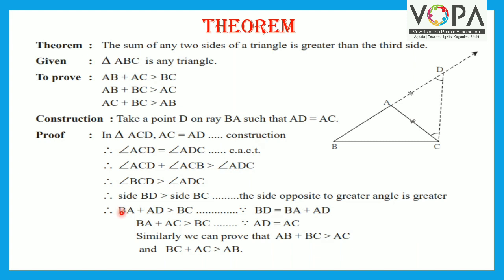Therefore, the side opposite to angle BCD is BD. Therefore, BD is greater than BC, which is the side opposite to angle ADC. Now, BD is equal to BA plus AD. So BD is replaced with BA plus AD, giving BA plus AD is greater than BC. Since AD is equal to AC, substituting AC for AD: BA plus AC is greater than BC. Similarly, we can prove AB plus BC is greater than AC, and BC plus AC is greater than AB.